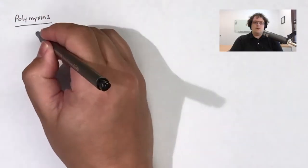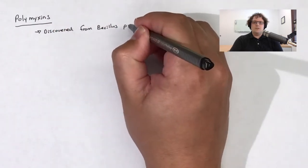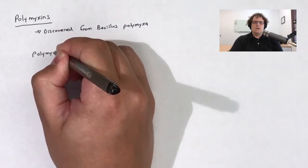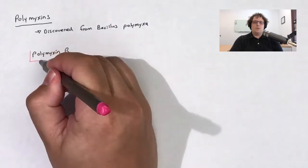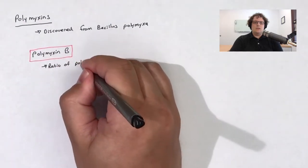Polymyxins are a group of basic peptides that were first discovered from the bacteria Bacillus polymyxa. There are two structurally similar polymyxins that are used clinically and their names are polymyxin B and colistin, i.e. polymyxin E.